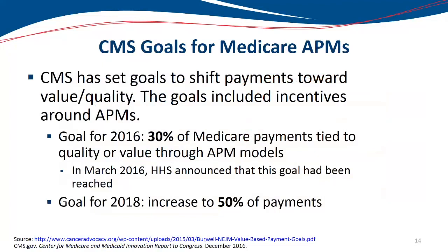CMS's goals for Medicare alternative payment models: they set similar goals — 30% for Medicare in 2016, and also 50% for 2018. In March of 2016, HHS announced that its goal had been reached. They had been progressing and reached the goals they set out, and it is expected that in 2018 they will reach 50% of the payments being under an alternative payment model structure.